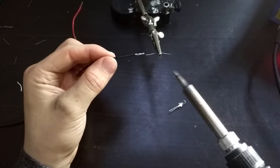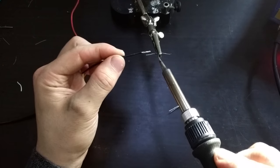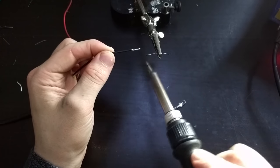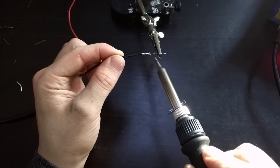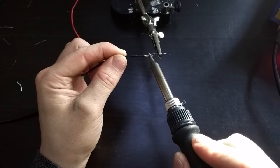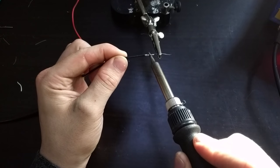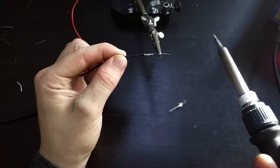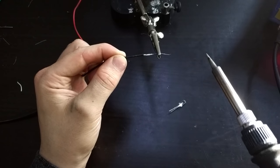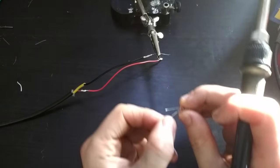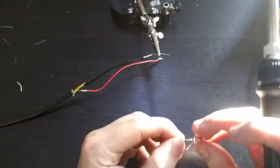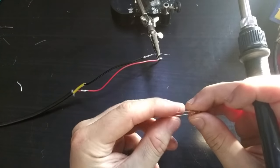I've already tinned the leads of the resistor here. So I'm just going to apply the soldering iron to it. Let that set. And then while the resistor is in there, I'm going to apply the resistor to the negative side of the LED.